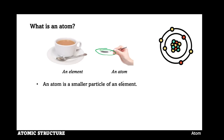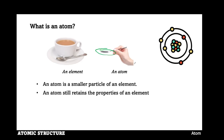Hence, an atom is a smaller particle of an element that still retains the property of an element. As you can see in this illustration, the little quantity of tea inside the teaspoon still has the taste, which can be regarded as the property of the tea inside the mug. It means that an atom of sodium will have the same properties as a sodium element.